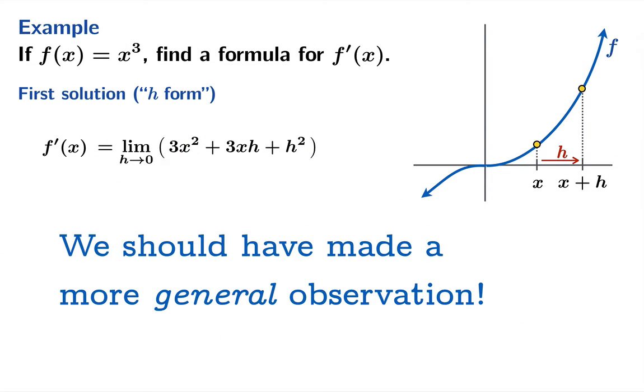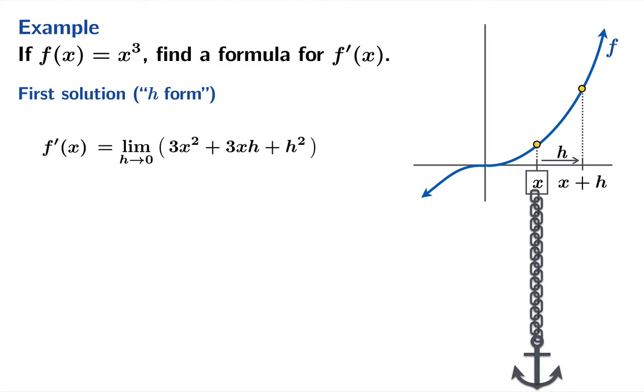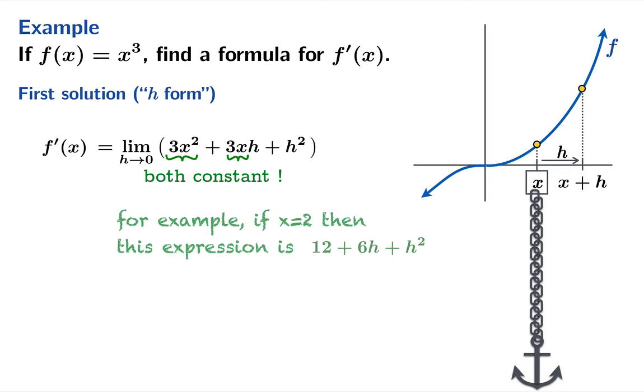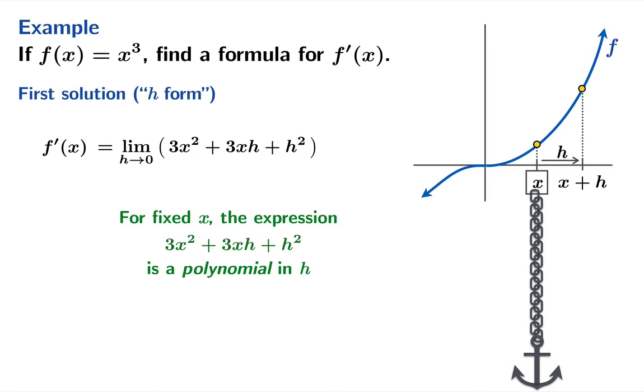But let's revisit this calculation we should have made a more general observation. Since x has been anchored so to speak so 3x squared and 3x are constants so for example if x had been 2 then the expression would have just been 12 plus 6h plus h squared.